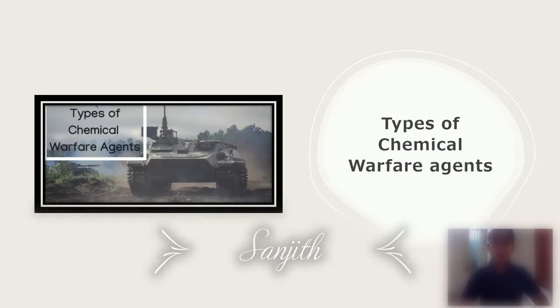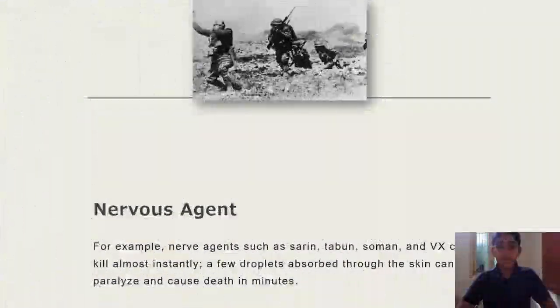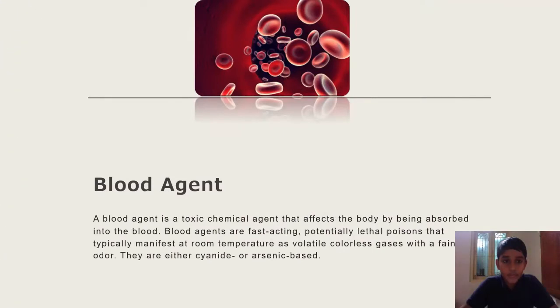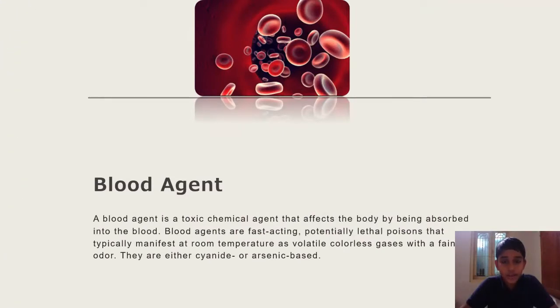Types of Chemical Warfare Agents: Nerve Agents — for example, nerve agents such as sarin and tabun, soman and VX can kill almost instantly. A few droplets absorbed through the skin can paralyze and cause death in minutes. Blood Agent — a blood agent is a toxic chemical agent that affects the body by being absorbed into the blood. Blood agents are fast-acting, potentially lethal poisons that typically manifest at room temperature as volatile colorless compounds with a faint odor. They are either cyanide or arsenic based.